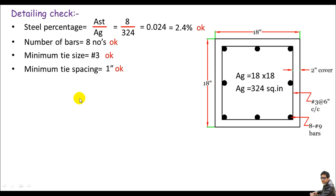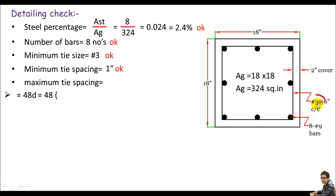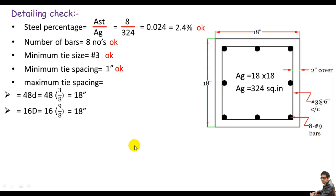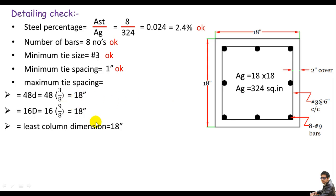Now check the maximum tie spacing, which is the smallest of three values. First: 48 × tie bar diameter = 48 × (3/8 in) = 18 inches. Second: 16 × main bar diameter = 16 × (9/8 in) = 18 inches. Third: least column dimension = 18 inches. So the maximum tie spacing is 18 inches. Our actual spacing is 6 inches, which is less than 18 inches — we are okay.